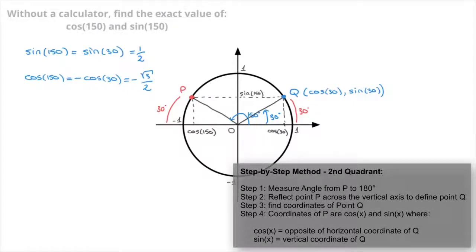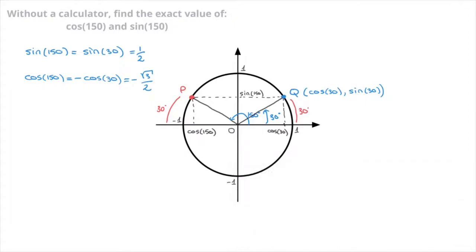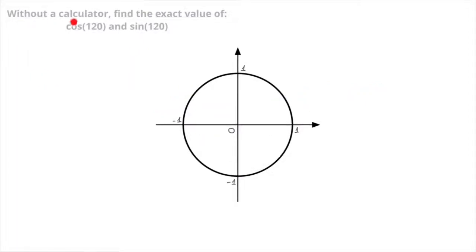This method and the steps that we've just followed will always work so long as we're in the second quadrant. Let's go ahead and work through a couple more examples. We're asked, without a calculator, to find the exact value of both cosine of 120 and sine of 120. Starting from the point 1, 0 again, the point on the unit circle corresponding to an angle of 120 degrees is found by moving anti-clockwise along the unit circle until we make an angle of 120 degrees — approximately here. I'll add that point and I'll call that point P.